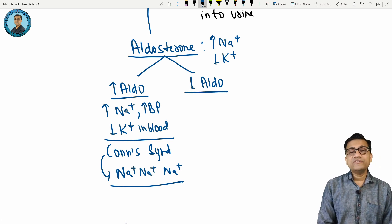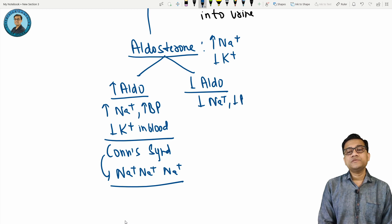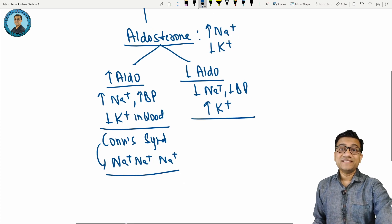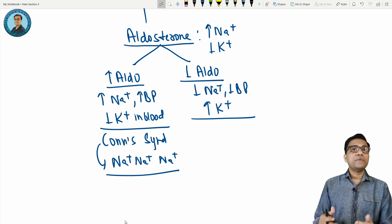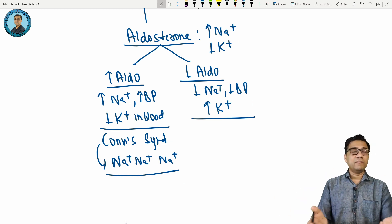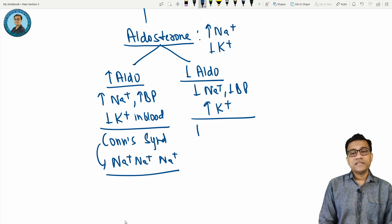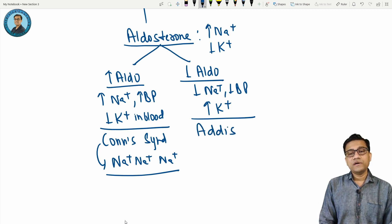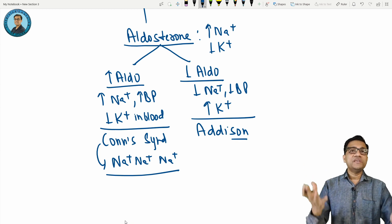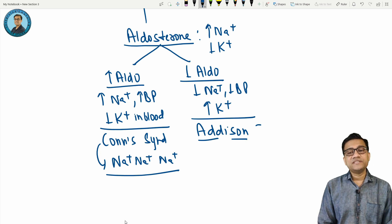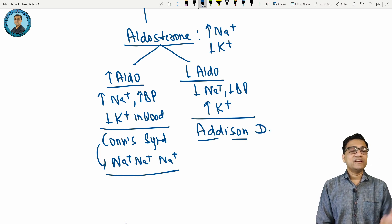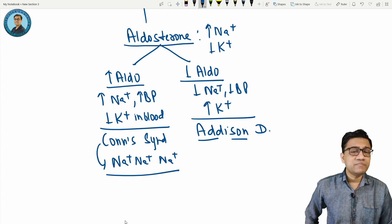If aldosterone decreases, obviously there will be decreased sodium, decreased BP, increased potassium, hyperkalemia. Now remember when you ask sons to increase the property, they rather split the property, like Ambani splitting the Reliance empire. Same way, the name is Addison. How to remember? You ask the son please add the property, increase, they rather split. So Addison means decreased aldosterone. Addison's disease will have decrease in this. That is the pathological medicine part.